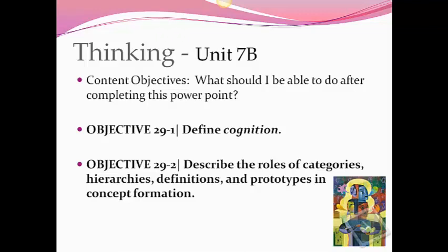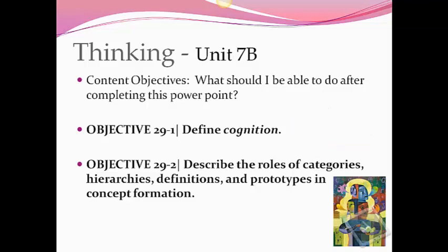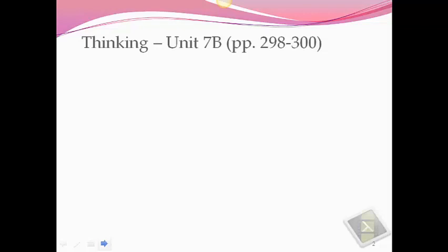Hi. In today's video, we're going to look at thinking. Our content objective — basically what should I be able to do after completing this PowerPoint — is first we should be able to define cognition. Second, we should be able to describe the roles of categories, hierarchies, definitions, and prototypes in how we form our concepts. This is Unit 7B in Myers for AP Psychology, covering pages 298 to 300.